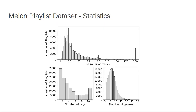This figure shows the distribution of number of tags, genres, and tracks in the playlists of the dataset. We can see that the playlists contain up to 200 tracks, with 41 tracks on average. The average number of tags per playlist is 3.91, with a maximum of 11 tags in a playlist. The number of different genres in a playlist on average is 6.31, with a maximum of 26.